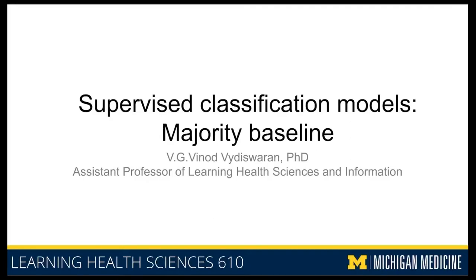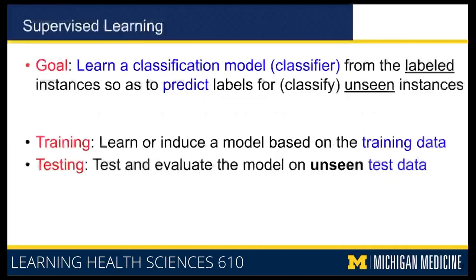We are going to start talking about different classification models and start with a majority baseline model. To recap what supervised learning is: the goal is to learn a classification model or a classifier from labeled instances so that you can predict labels for unseen instances. It consists of two phases. In the training phase, you are learning a model based on the training data. In the testing phase, you test or evaluate the model on unseen data.